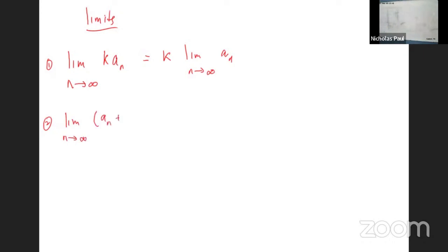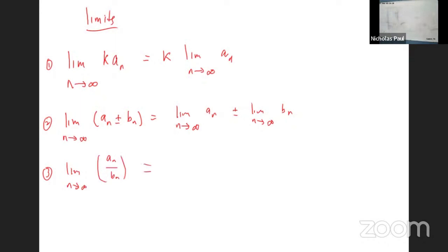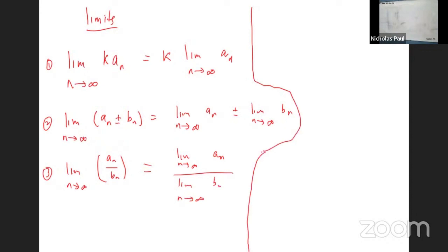Let's say I give you two sequences: a_n and b_n. Then we can split the limit up. The limit as n approaches infinity of (a_n plus or minus b_n) equals the limit as n approaches infinity of a_n, plus or minus the limit as n approaches infinity of b_n. So you can evaluate them individually.